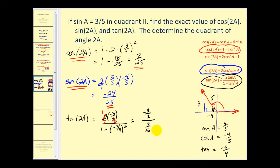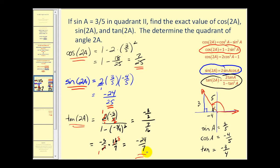This becomes negative three halves divided by seven sixteenths, or multiplying by the reciprocal, times sixteen sevenths, which simplifies to negative twenty-four sevenths for the tangent of two A. We could also have taken sine of two A over cosine of two A to obtain negative twenty-four sevenths, but we used the identity here.